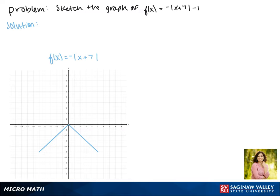Since we're adding 7 to x inside of the absolute value, that moves our function 7 spaces to the left. And now the vertex is at the point negative 7, 0.